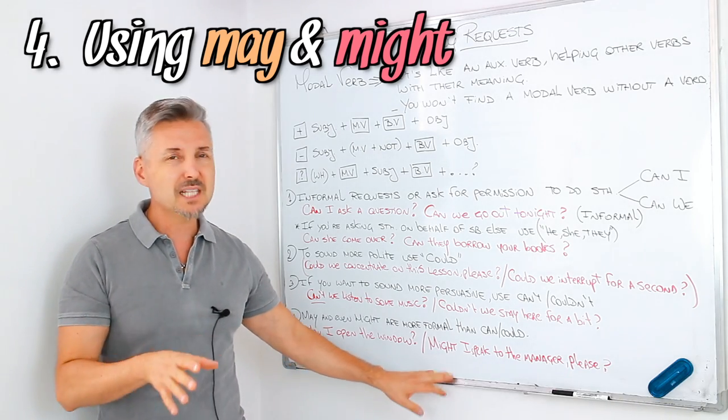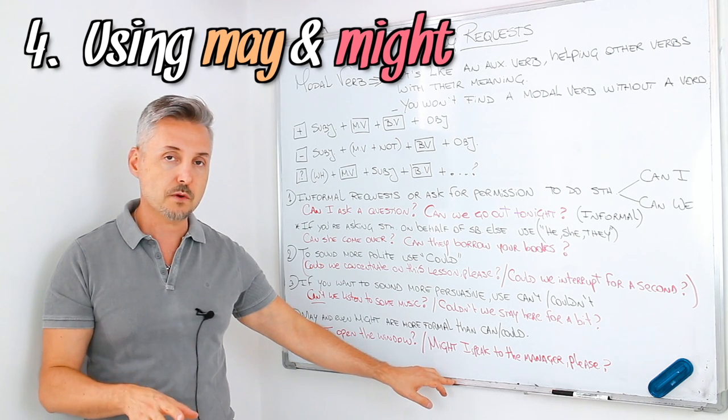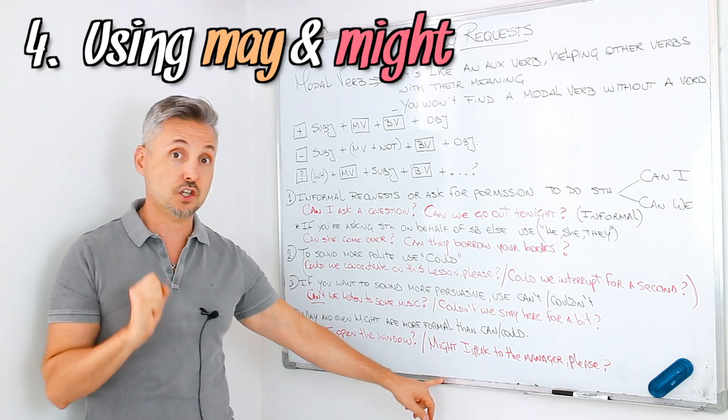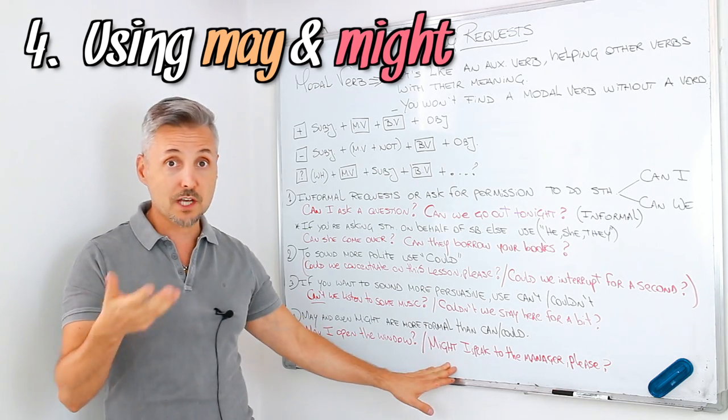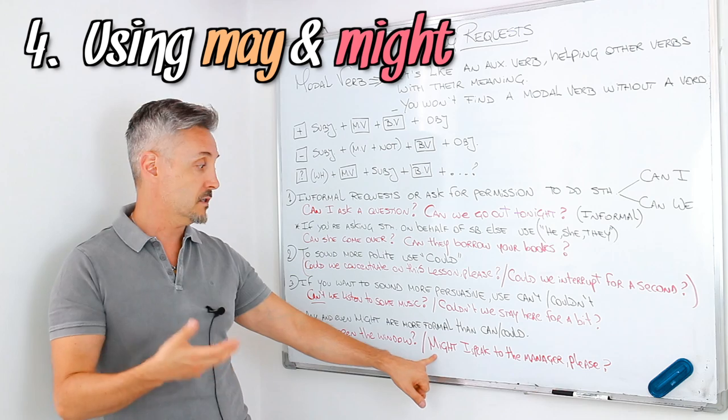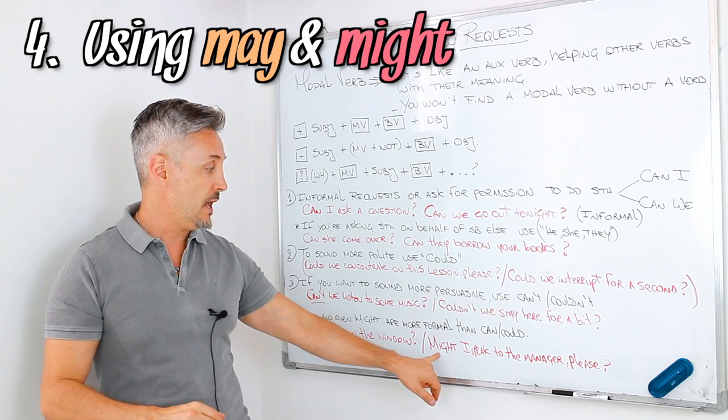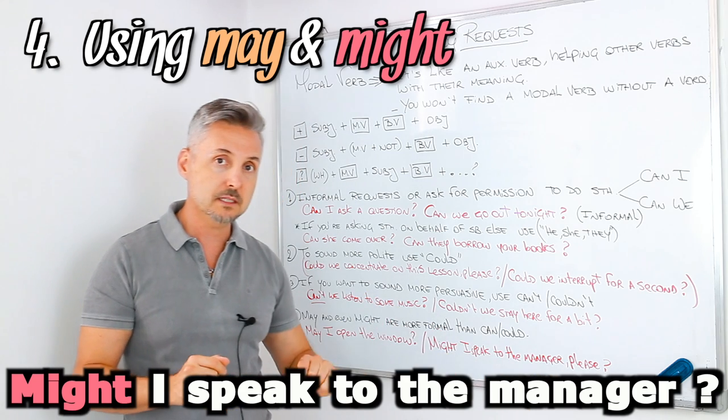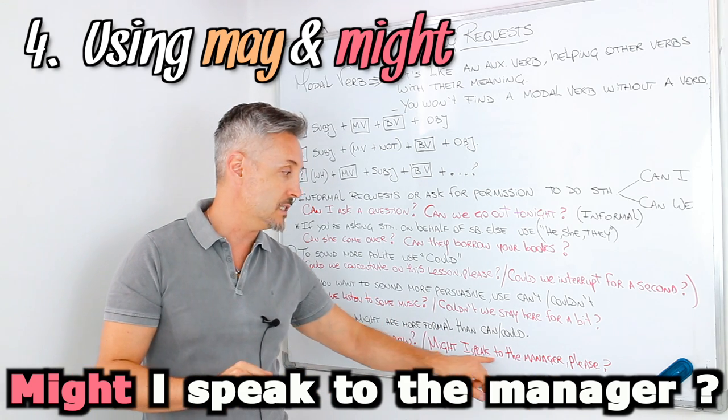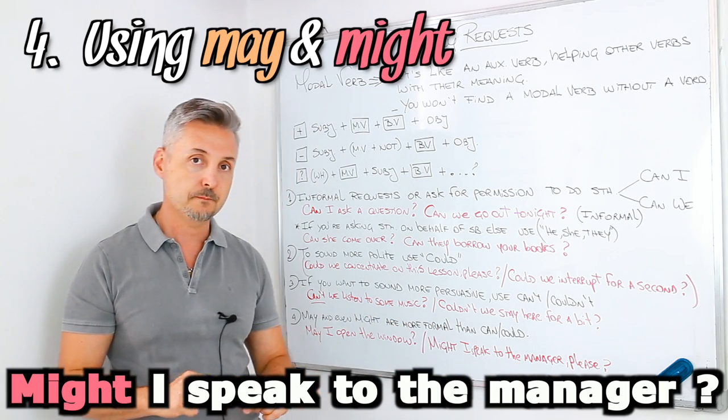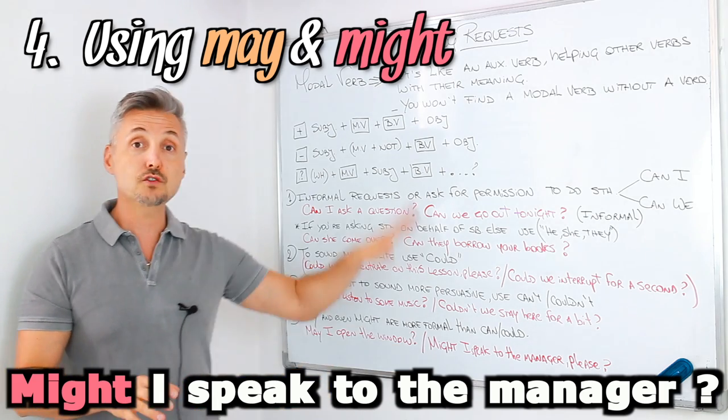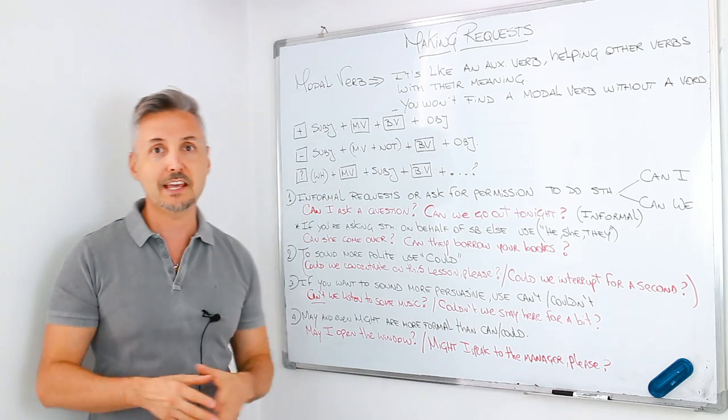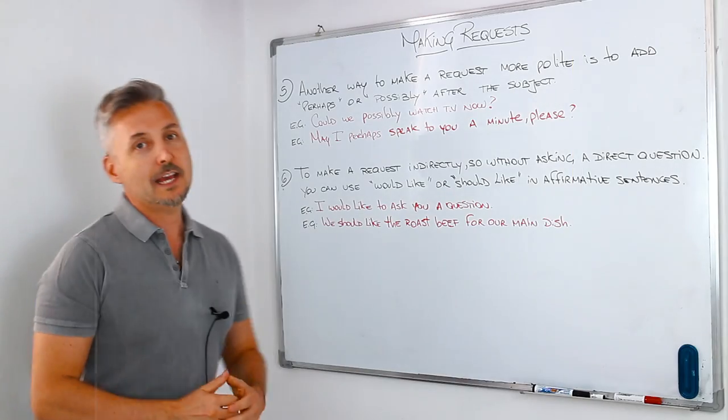With might, instead, might is very, very formal. And you rarely find it in questions. But I gave you an example question, and it would be, Might I speak to the manager, please?